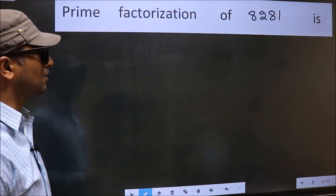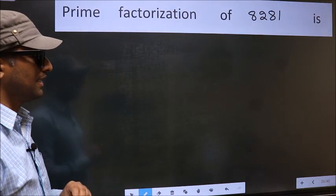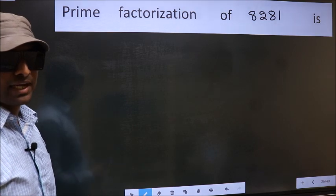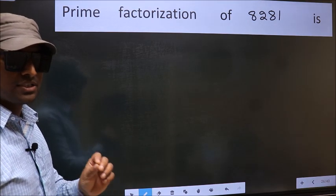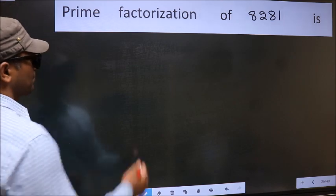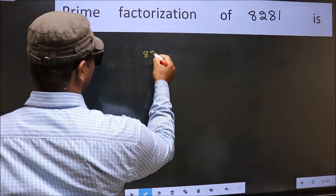Prime factorization of 8281. To do prime factorization first we should frame it in this way: 8281.